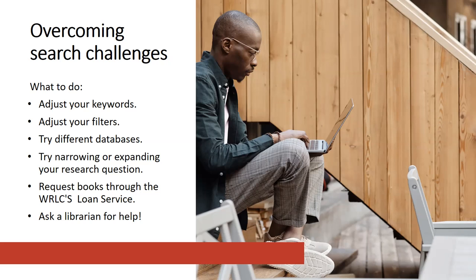If you are having trouble finding a particular resource, you can request books through our consortium — the Washington Research Library Consortium's loan service — where you can access books from eight other local universities. Or you can request articles through our interlibrary loan process, where you can send a request to another library for a particular resource. And finally, another way to overcome search challenges is just to ask for help. You can always reach out to a librarian through chat, through email, or you can call us. We are here to help you every step of the research process.